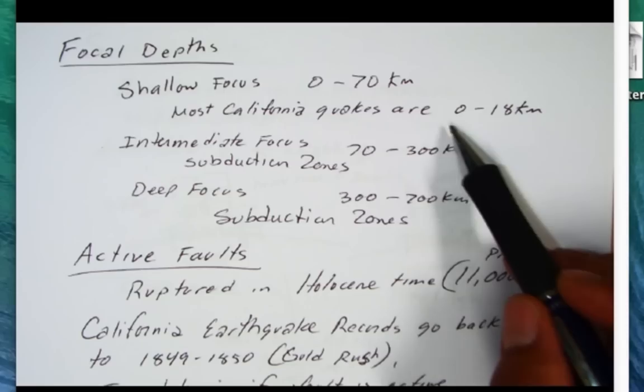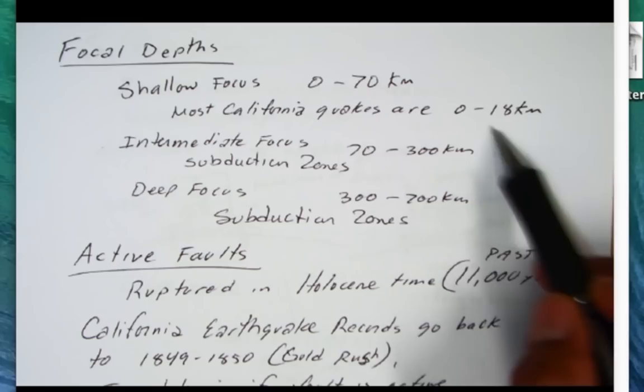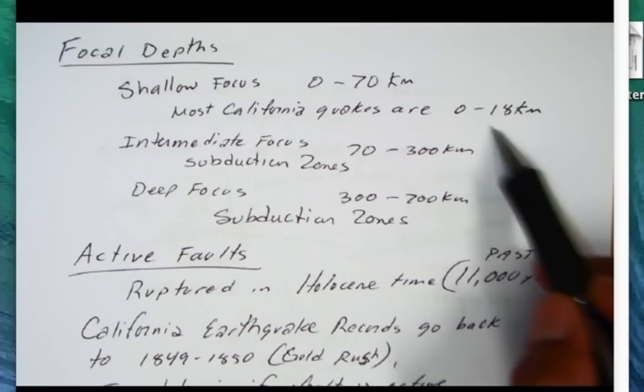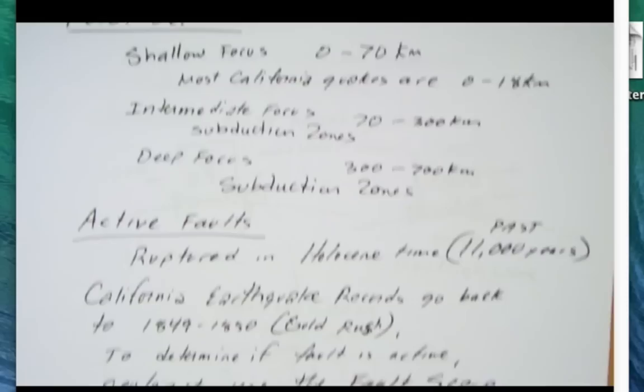Most California earthquakes, those on the San Andreas faults are between 0 and 18 kilometers, usually around 8 to 10 kilometers. This number here is from the Loma Prieta earthquake, which is relatively deep for San Andreas type earthquakes. But most of them are around 8 to 10 kilometers. That's a shallow focus.